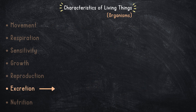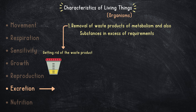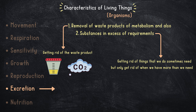Next, we have excretion, which is the removal of waste products of metabolism and also substances in excess of requirements. This means getting rid of waste products like urea or carbon dioxide, as well as getting rid of things we sometimes need but only remove when we have more than we need — such as water or minerals.